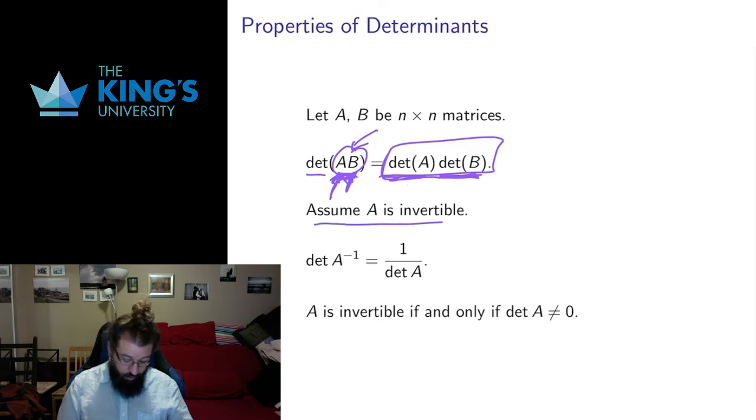Now if A is invertible, the determinant of the inverse is the reciprocal of the determinant. And again hopefully that makes sense as well. Because if A multiplies area by 3, the inverse has to undo this, which will multiply area by 1 third. So we get the opposite multiplicative effect by taking the reciprocal.